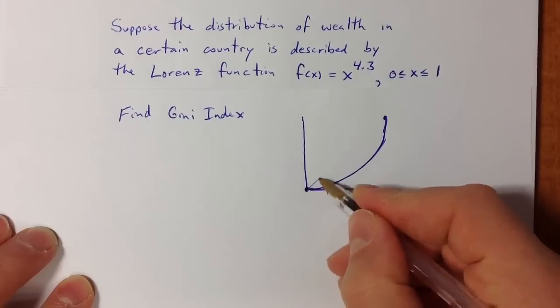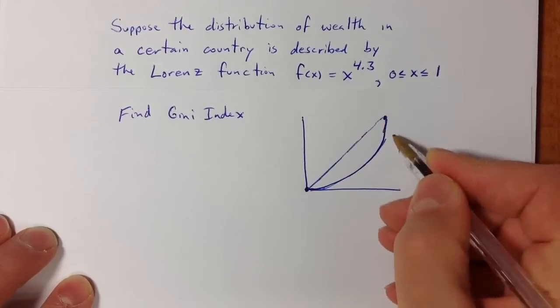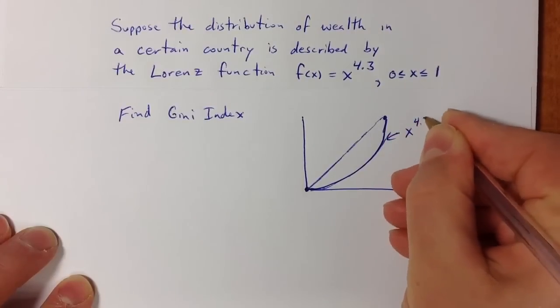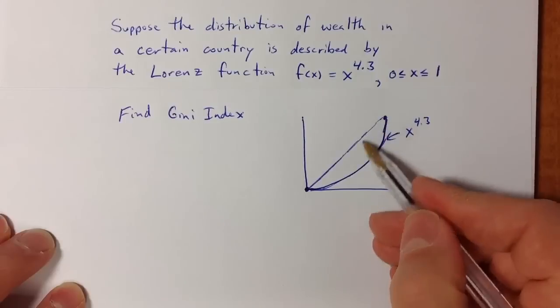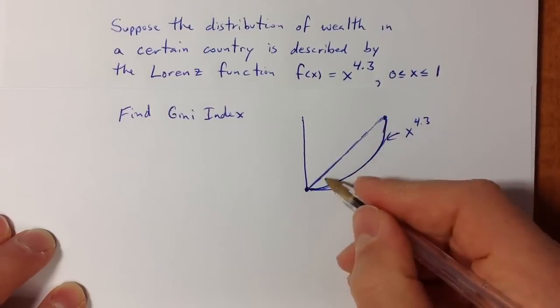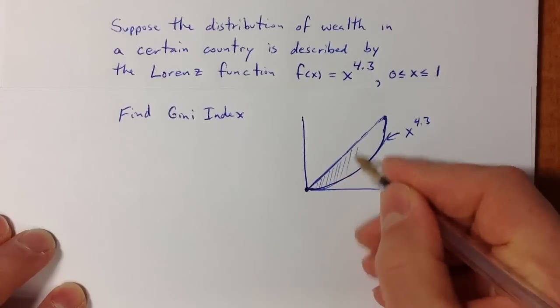The Gini index measures inequality by comparing the given Lorenz curve x^4.3 to the line y = x, which represents a perfectly equal distribution. The Gini index is the area between these two curves.